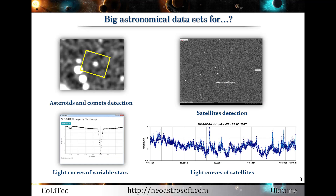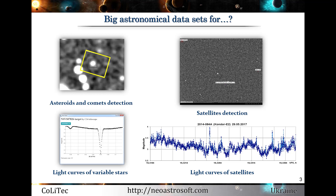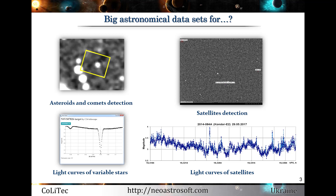When we have a lot of astronomical data, what can we do with it? There are a lot of directions of research in astronomy. Some of them are solar system objects, variable stars, asteroids, comets, near-Earth objects, satellites, and others.